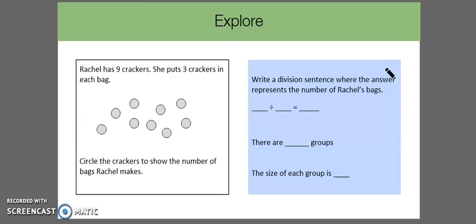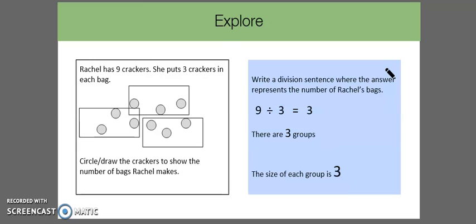Okay, we're going to move on to the next part. For here, I was able to circle or in this case put a rectangle around each of the crackers. We know that Rachel has 9 crackers and she puts 3 crackers in each bag. For the rectangle, the rectangle will serve as each bag.